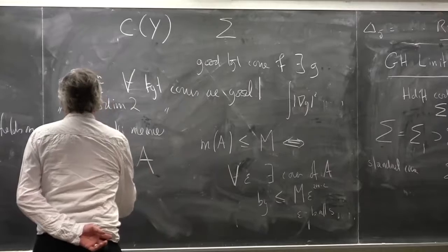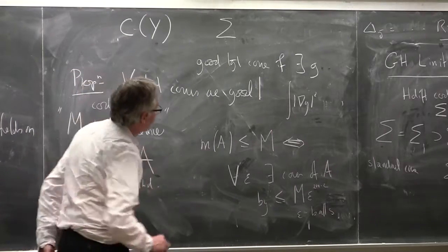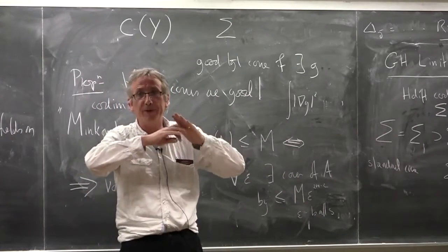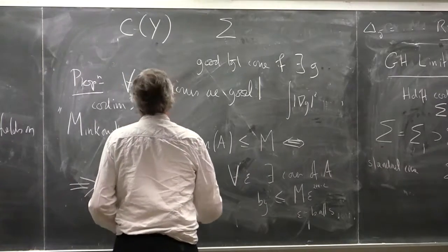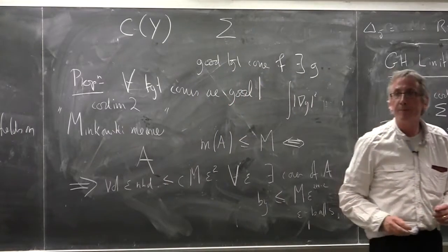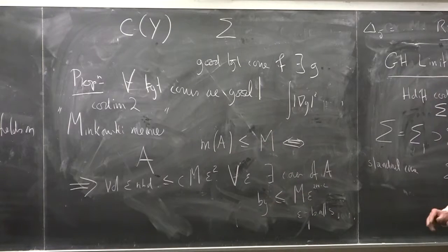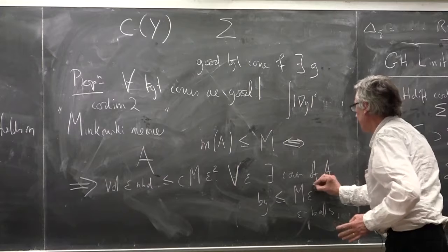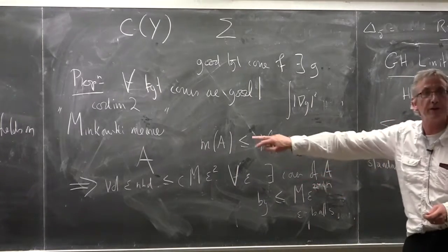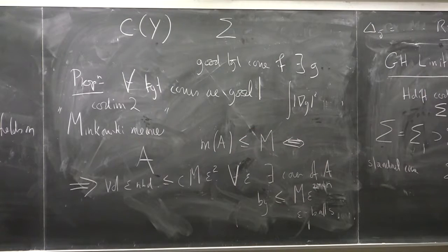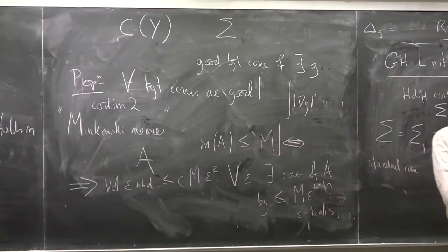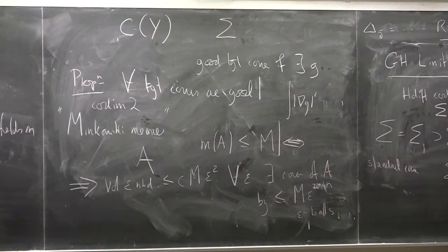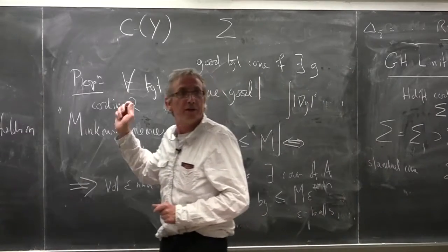This is the number you'd expect for a real co-dimension 2 set. Why is this good? This implies that the volume of an epsilon neighbourhood, in a context where the volume of balls is essentially like the Euclidean volume up to bounded factors, the volume of an epsilon neighbourhood is less than some universal constant times M times epsilon squared. Because you cover an epsilon neighbourhood by taking these balls but perhaps twice the size. They've got volume, sorry this should be 2N minus 2. The volume of each ball is roughly epsilon to the 2N, this is the number of balls, and so you get epsilon squared. So it's a good notion for a co-dimension 2 set. It gives you control of the volume of the neighbourhoods.